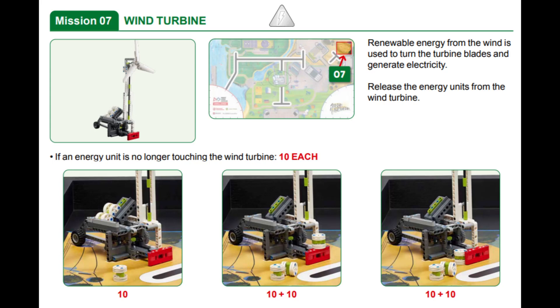In this video, we are showing you two solutions for solving Mission 7 called Wind Turbine for this year's superpowered robot game. One with the Spike Prime and one with the EV3.